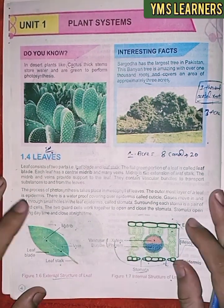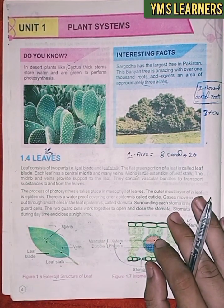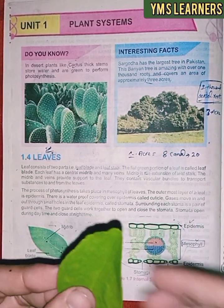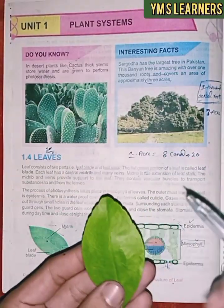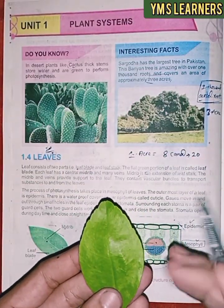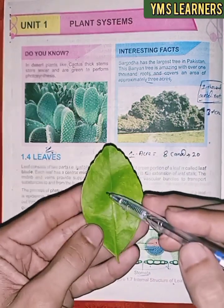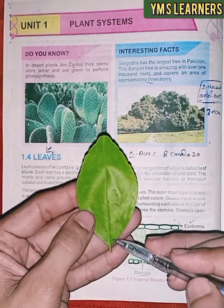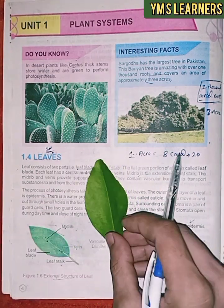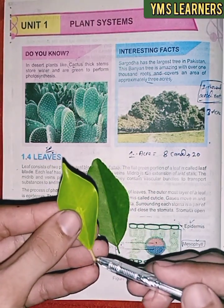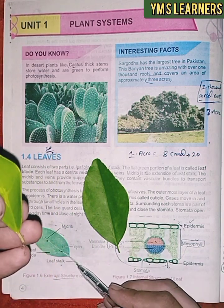Now this is the leaf introduction — it is practical. The leaf has two parts: leaf blade and leaf stalk. These are the two parts of the leaf — leaf stalk and leaf blade.